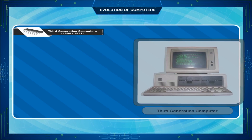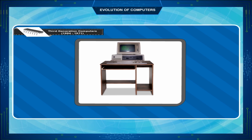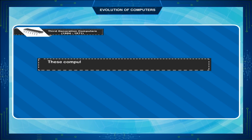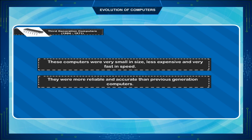Third generation computers replaced transistors with ICs, integrated circuits. The size of third generation computers was so small that they could be easily placed on a small table. These computers were smaller in size, less expensive, very fast in speed, and more reliable and accurate than the previous generation computers.